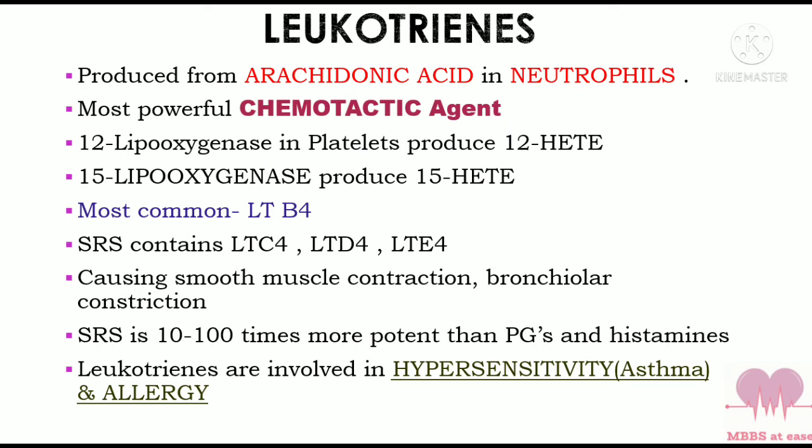Leukotrienes are another set of eicosanoids produced from arachidonic acid in neutrophils. These are the most powerful chemotactic agents — factors that attract cells to inflammatory sites. 12-lipoxygenase in platelets produces 12-HETE (hydroxy eicosatetraenoic acid). The most common leukotriene is leukotriene B4.